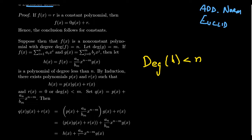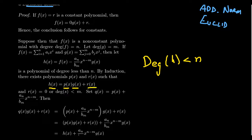If we proceed by induction on the degree of the polynomial F, since H now has degree smaller than N, we can use our induction hypothesis. The base case is constant polynomials with degree equal to zero. By the inductive hypothesis, since H has degree smaller than F, there exist unique polynomials P(X) and R(X) such that H(X) = P(X)·G(X) + R(X), where R(X) is either the zero polynomial or has degree strictly smaller than M.